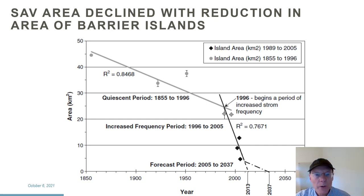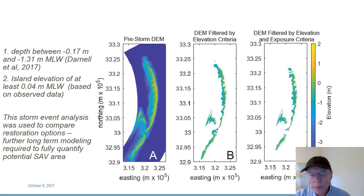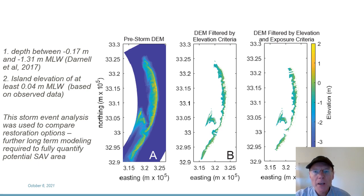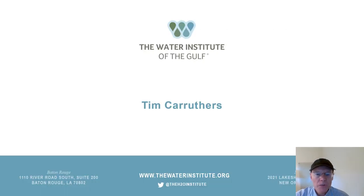This graph shows island area over time: it reduced slowly from 1850 to 1996, and then there was a period of extreme storms with rapid reduction in both island area and seagrass extent. The numerical model looks at sand movement during storms, filtered by a depth range with observed SAV and exposure based on island height. There wasn't much difference between restoration scenarios, and we realised additional modelling is needed for long-term sediment reworking. Nevertheless, these numerical modelling approaches can be very effective at estimating potential seagrass habitat and informing large-scale habitat restoration.